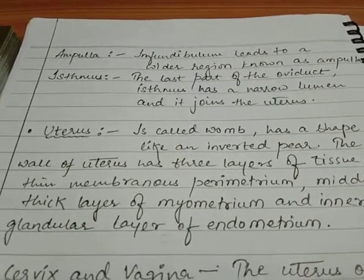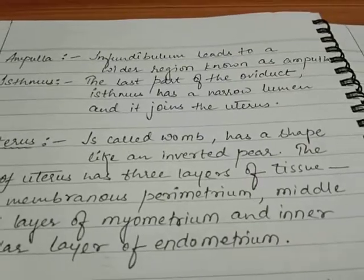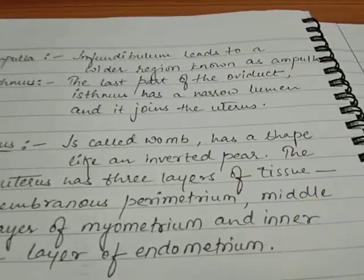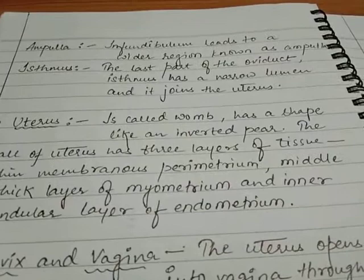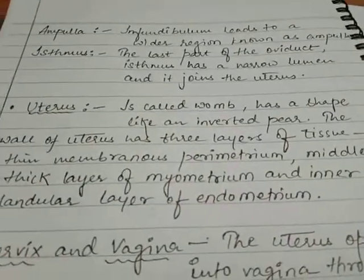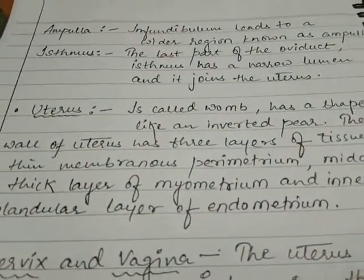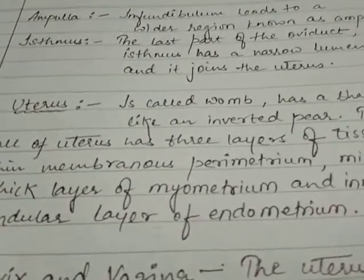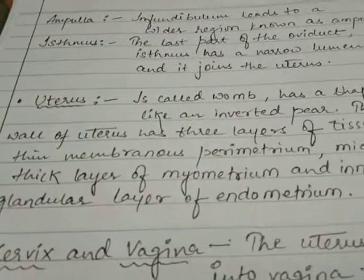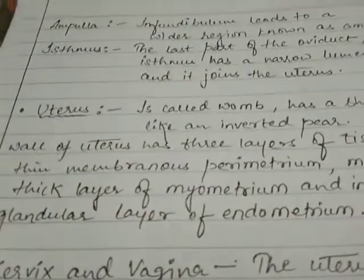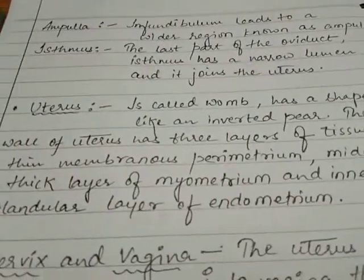The outermost is a thin membranous layer known as the perimetrium. Next to the perimetrium is a middle thick layer of muscles known as the myometrium. The myometrium helps in the contraction of the uterine wall to push the embryo out of the female reproductive tract during the delivery process.